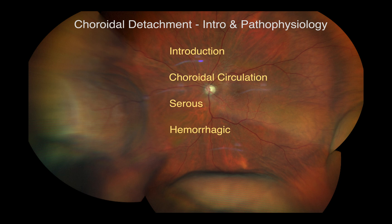The pathophysiology of serous choroidal detachment may be explained by Starling forces within the choroid. The intraocular pressure is the interstitial hydrostatic pressure of the system and the suprachoroidal layer is the interstitial space. When there is disease, surgery or trauma that causes low pressure in the eye, this greatly reduces the interstitial pressure, therefore increasing the driving pressure out of the capillaries into the interstitial space, causing fluid to migrate into the suprachoroidal layer.